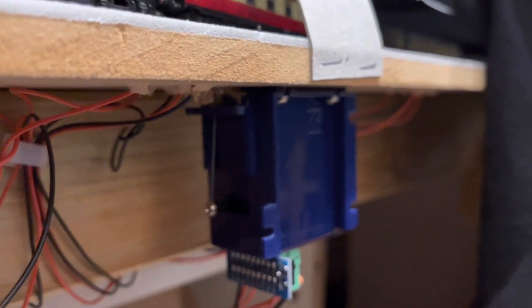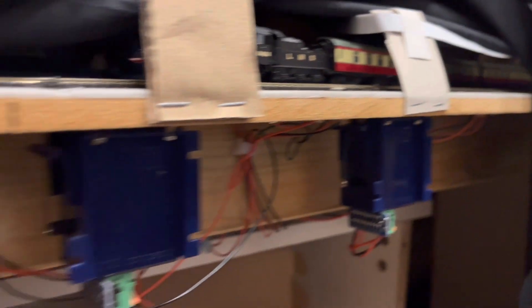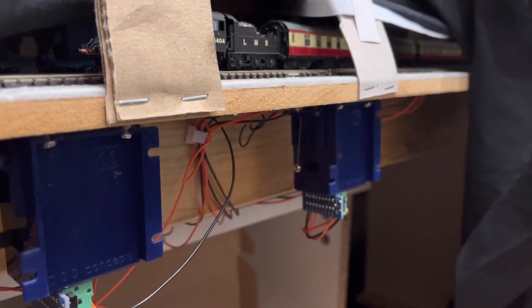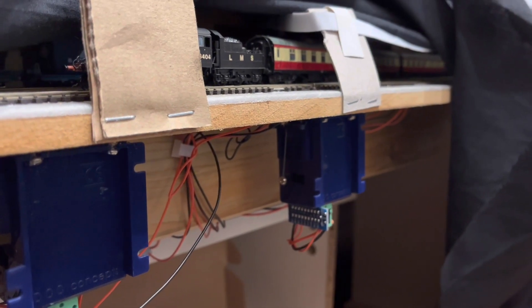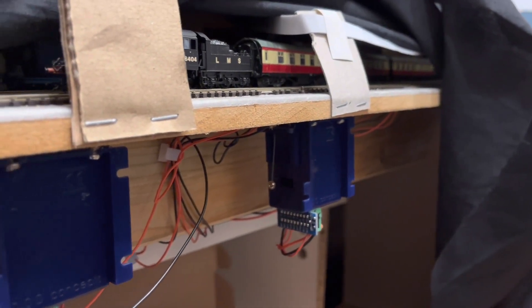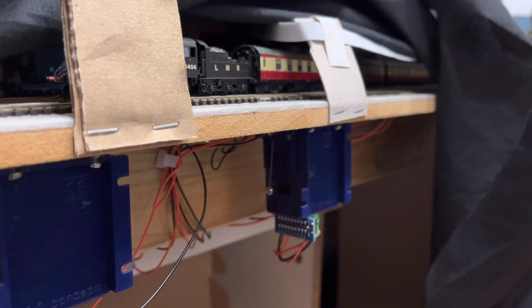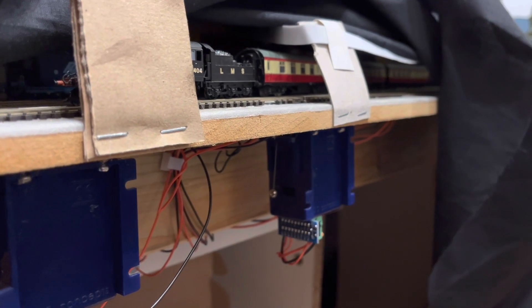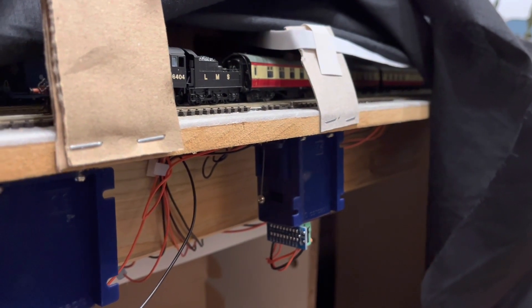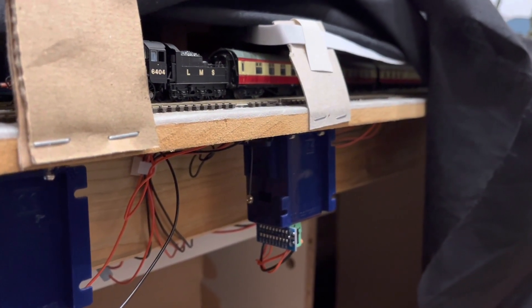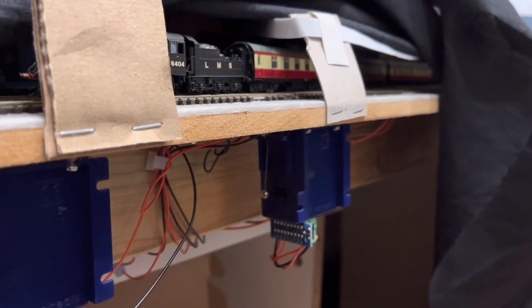All of these in this particular row of points, I've got about five in a row here for the fiddle yard, they are working perfectly fine but for some reason they forgot their DCC address. I've figured out what's causing that and that is a short circuit on the layout that causes them to reset and forget the address that is programmed in and you have to program them again.